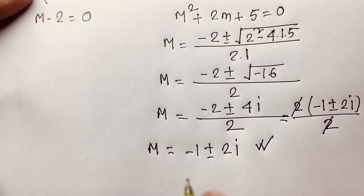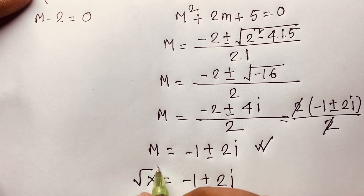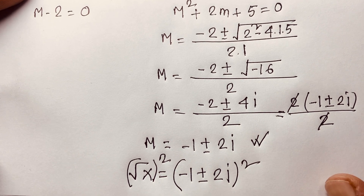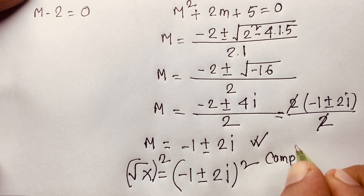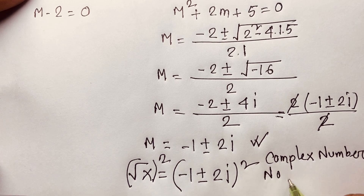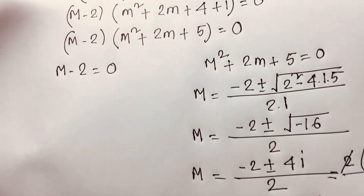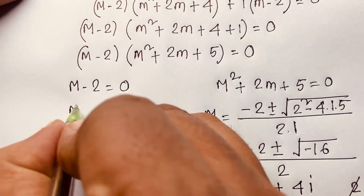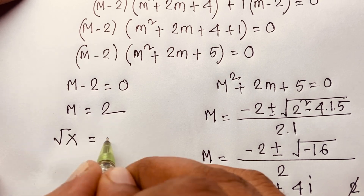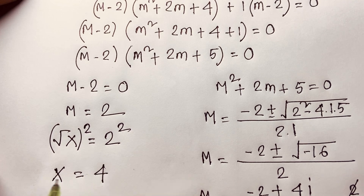But recall that m equals square root of x, so m equals minus 1 plus or minus 2i would give a complex solution for x. This is not a real solution — we need a real solution. Since this case gives complex numbers, we reject it. So looking at the first case, m minus 2 equals 0, which gives m equals 2. And since m equals square root of x, we have square root of x equals 2.